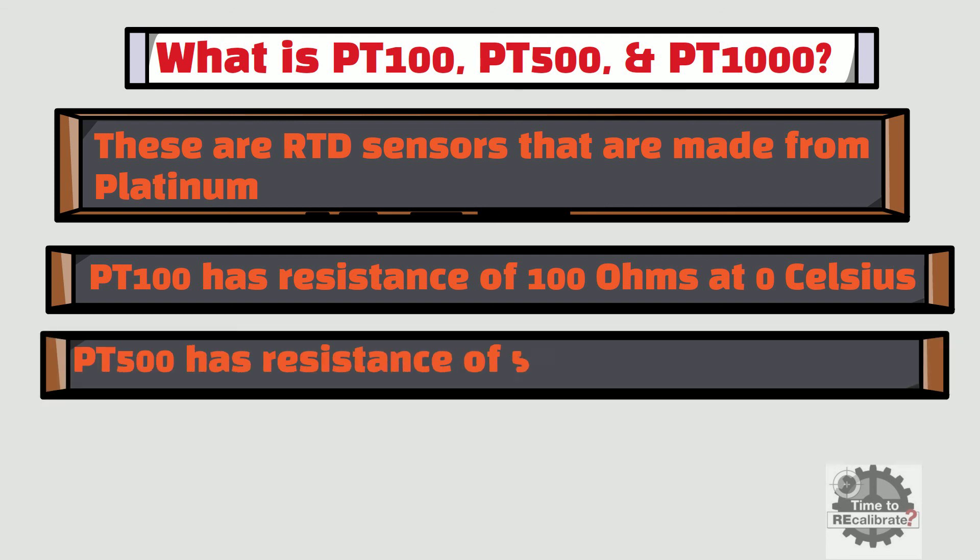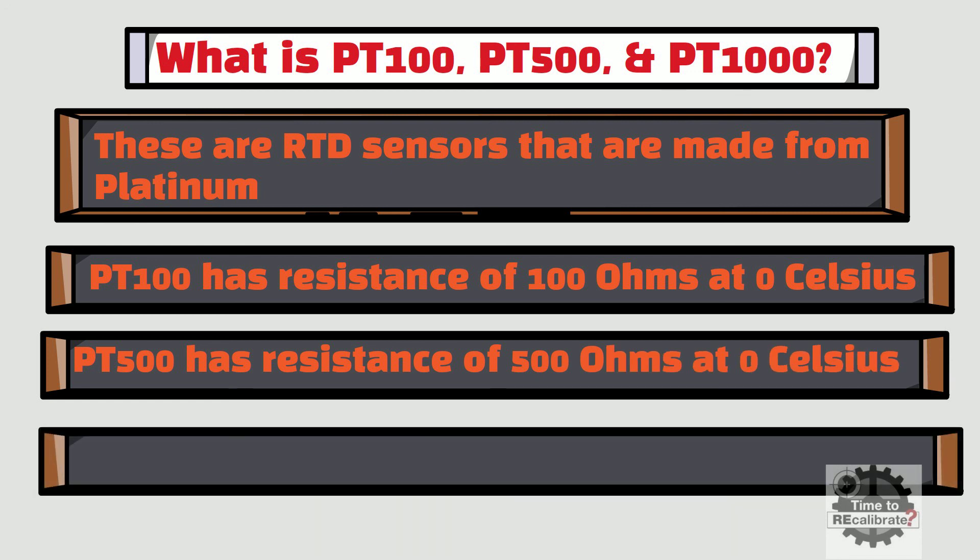The PT500 sensor has a resistance of 500 ohms at 0 degrees Celsius, and PT1000 has 1000 ohms resistance at 0 degrees Celsius.